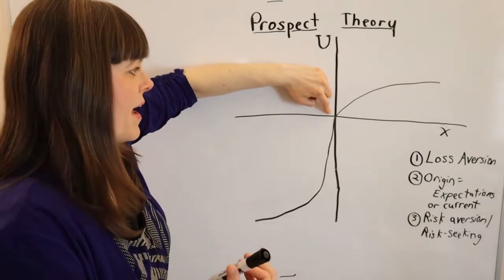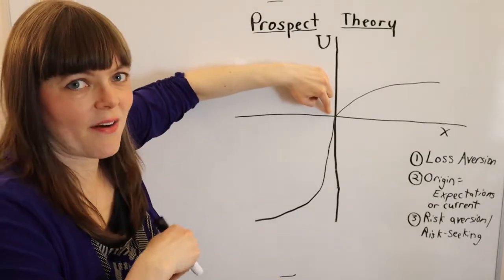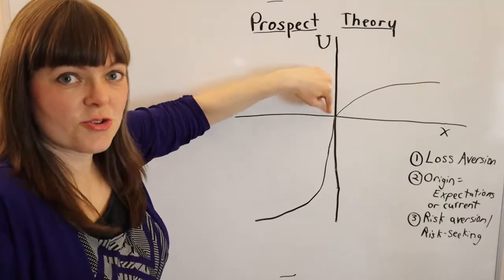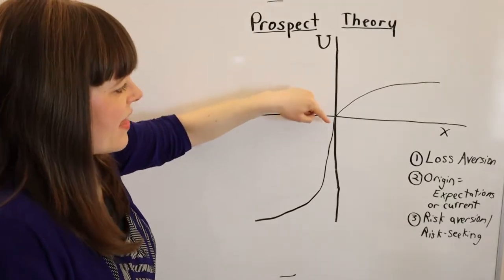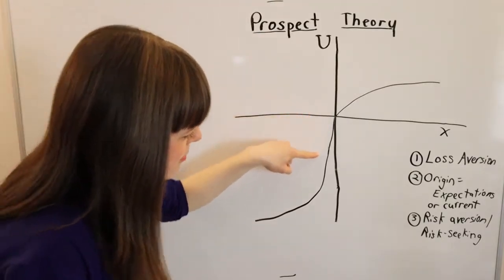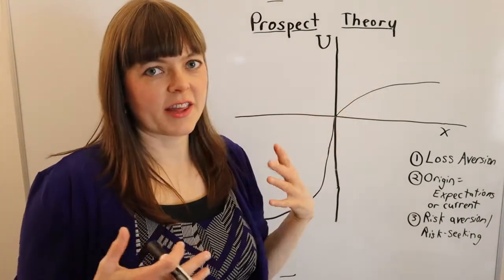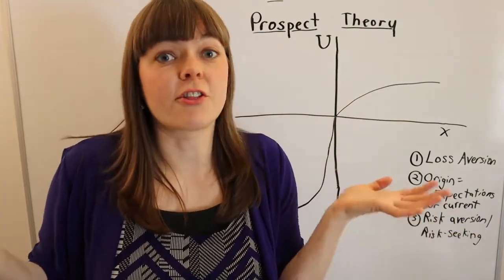So to lose that mug or pen through some kind of auction or some kind of arranged trade that the professor has, that loss would cost you much more in your utility loss than the gain of the other thing that you never thought you would have.